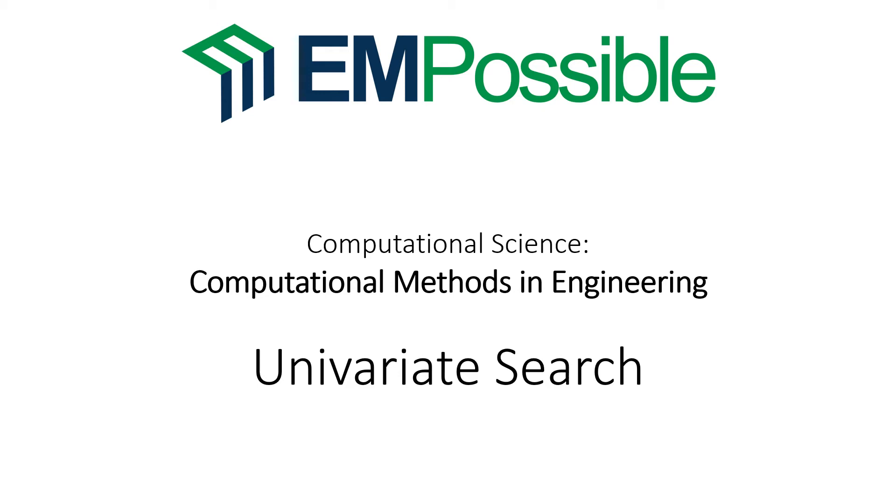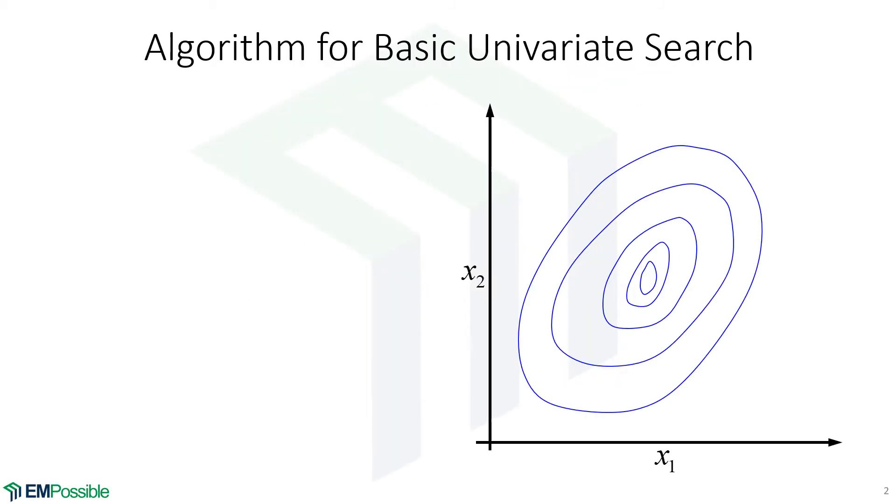The univariate search. This is probably the simplest of the multivariable optimizations there is. In fact, if somebody didn't know anything about fancy multivariable optimizations, this is likely what they would try first.